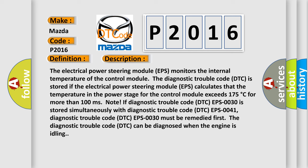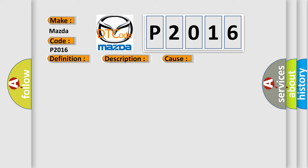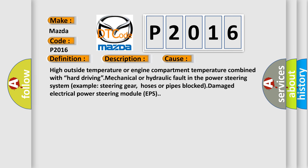The diagnostic trouble code DTC can be diagnosed when the engine is idling. This diagnostic error occurs most often in these cases: high outside temperature or engine compartment temperature combined with hard driving, mechanical or hydraulic fault in the power steering system such as steering gear, hoses or pipes, or a blocked or damaged electrical power steering module EPS.